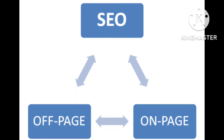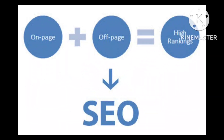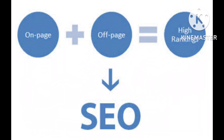SEO is of two types: one is on-page SEO and another is off-page SEO. Both are used to generate good traffic to the website or blog. On-page SEO is done inside the website, like keyword research, URL generation, and many others. Off-page SEO is outside the website, like social bookmarking submissions and directory submissions. I'll make a detailed video about on-page and off-page SEO in my upcoming videos.